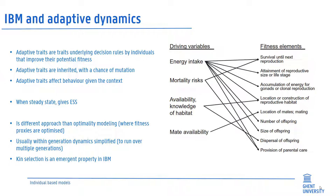This approach of adaptive dynamics is different from optimality modeling, in which scenarios are searched that maximize some fitness proxy. In IBMs, evolution occurs live but within a computer and can be monitored in time. Interestingly, kin selection is an emergent property of individual-based models.